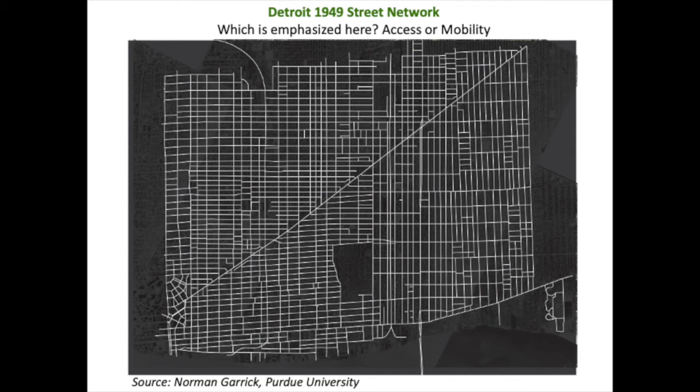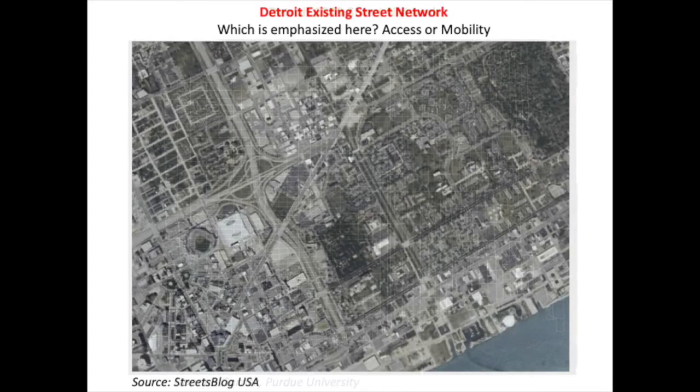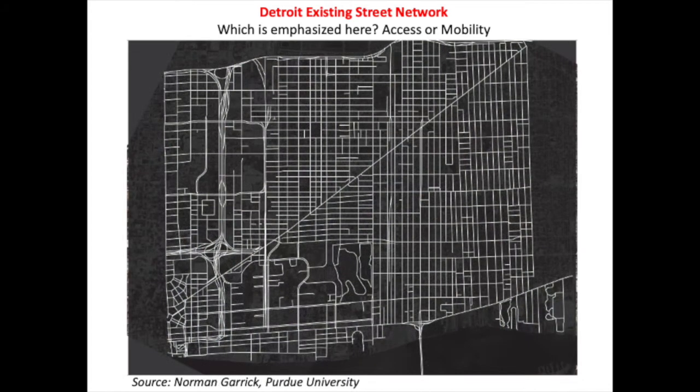This was not a network designed for speed, but for cyclists, pedestrians, and cars to access local businesses and places of residence. Now fast forward 70 years — the land uses and network are nearly unrecognizable. Abstracting the network from the satellite image, the grid pattern has been disrupted and local roads have been replaced by restricted access highways.